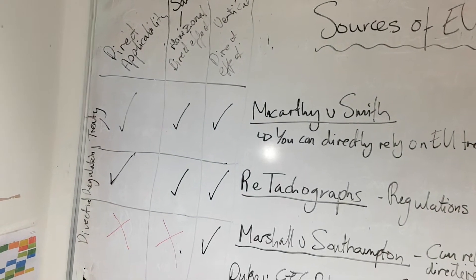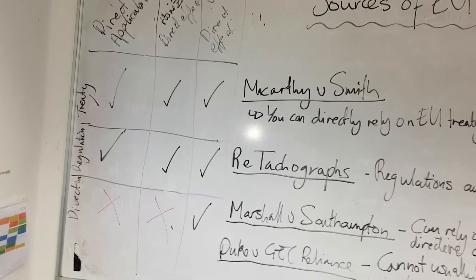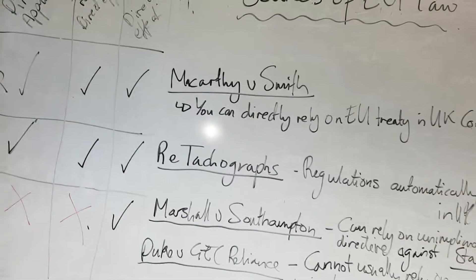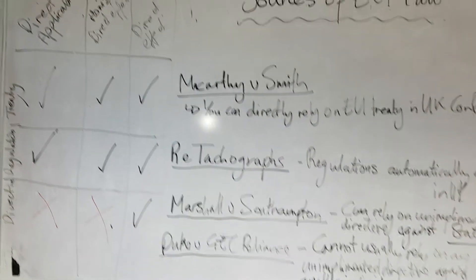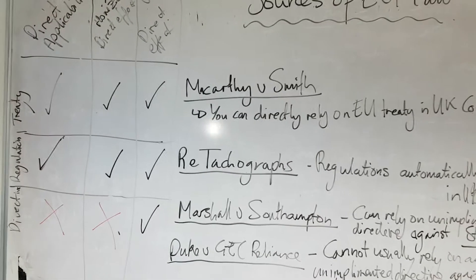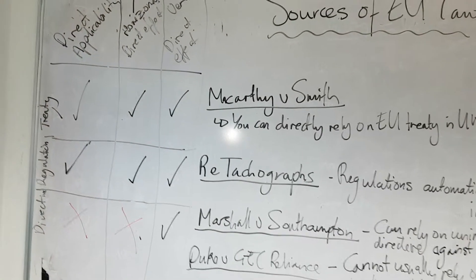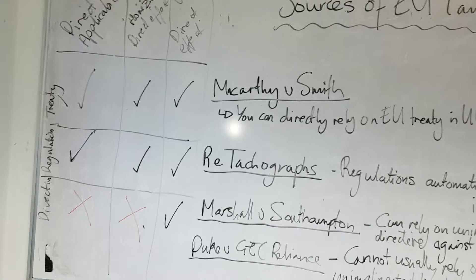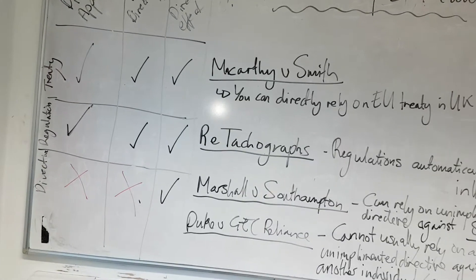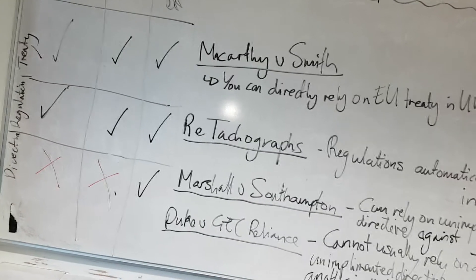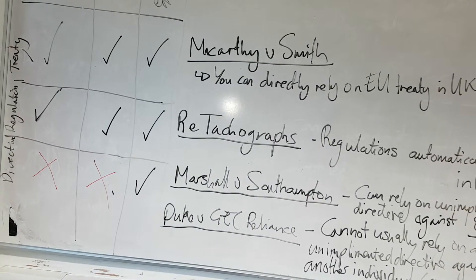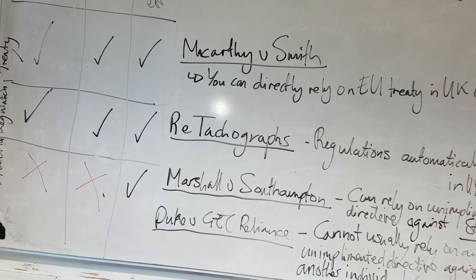First things first, we have to think about treaties. This is the primary legislation of the EU — a binding agreement between the EU and its member countries, such as the UK and the EU. These set out the objectives, the main aims of the EU, the rules for the institutions, how decisions are made, and the relationship between the EU and its member states.